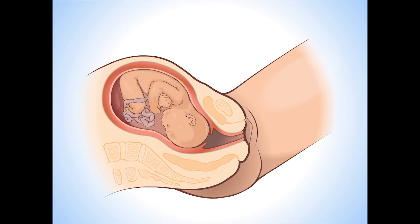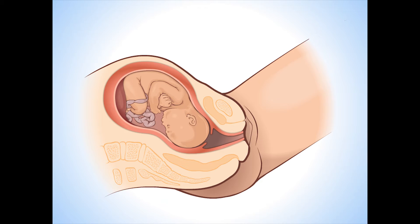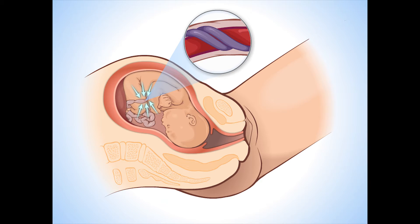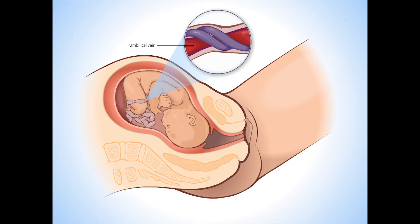Uncomplicated variable deceleration. During a contraction, the umbilical cord may be compressed. The umbilical vein has thin walls and will collapse first, leading to hypotension.